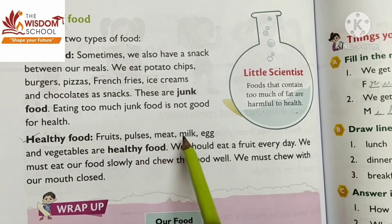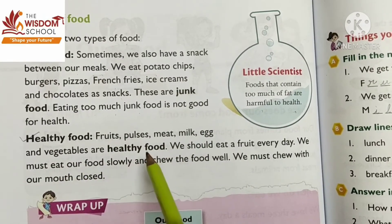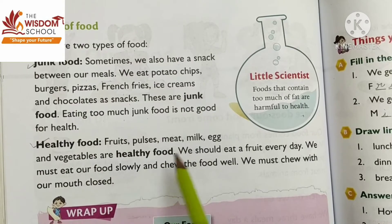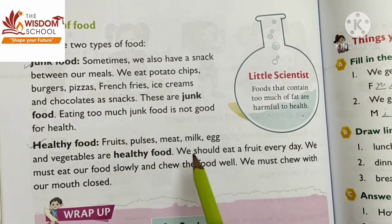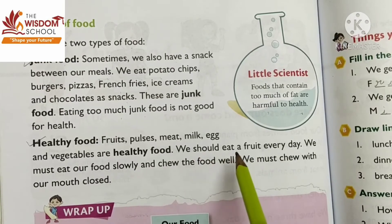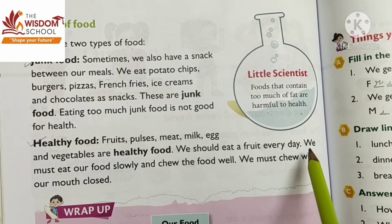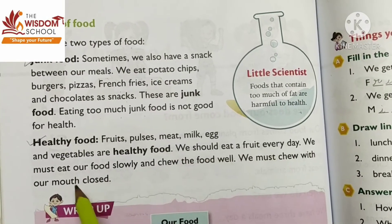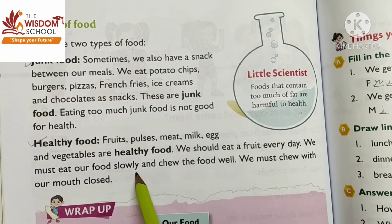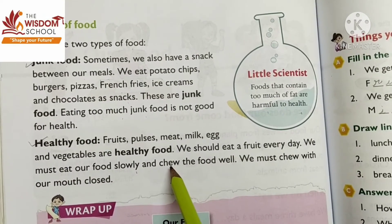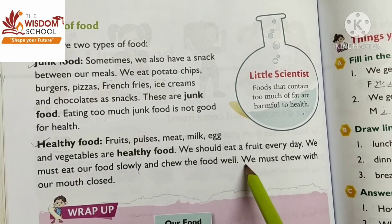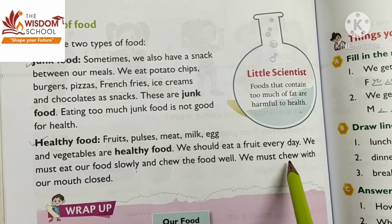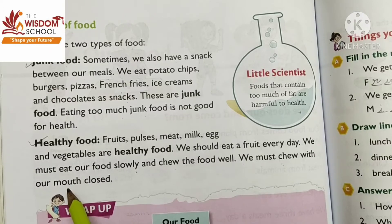Fruits, pulses, meat, milk, eggs, and vegetables are healthy foods. We should eat a fruit every day and consume fruit daily. We must eat our food slowly and chew the food well. We should consume our food slowly and chew it properly. We must chew with our mouth closed — when we chew our food, we should keep our mouth closed.